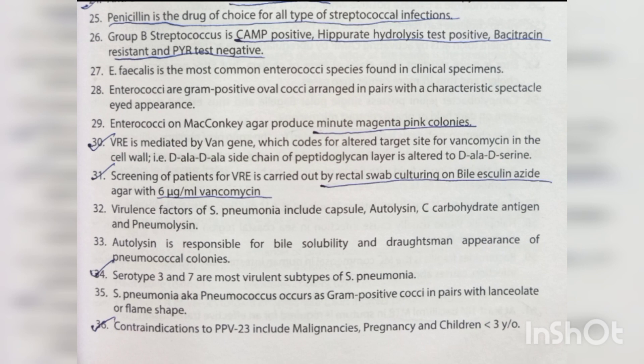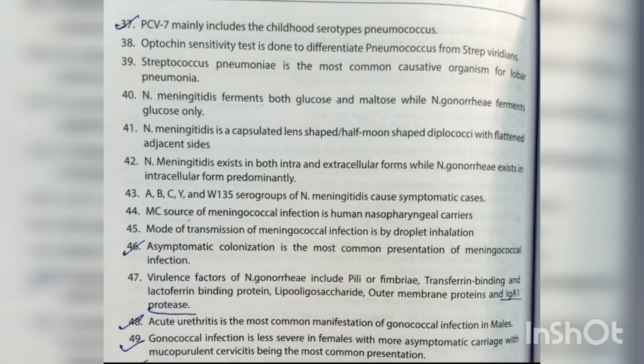Virulence factors of S. pneumoniae include capsule, autolysin, C-carbohydrate antigen, and pneumolysin. Autolysin is responsible for bile solubility and draughtsman appearance of pneumococcal colonies. Serotypes 3 and 7 are the most virulent subtypes. S. pneumoniae (pneumococcus) occurs as gram-positive cocci in pairs with lanceolate or flame shape. Contraindications to PPV-23 include malignancies, pregnancy, and children less than 3 years of age.